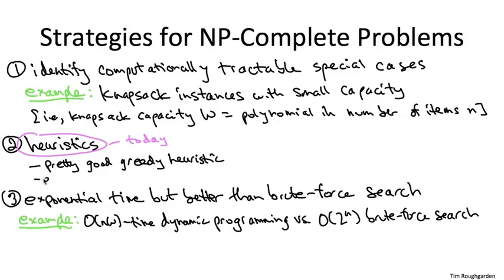We'll then pull out a different tool, namely dynamic programming, to develop yet another heuristic. It's going to be polynomial time, not as fast as the greedy solution, but its accuracy will be excellent. It will get within a one minus epsilon factor of optimal, where epsilon is a parameter that we can tune as we wish.